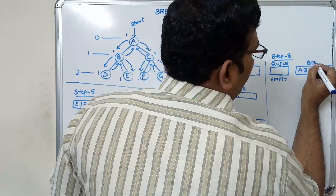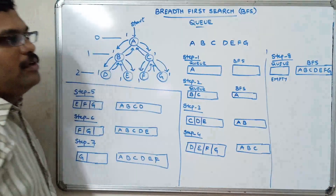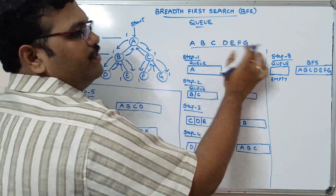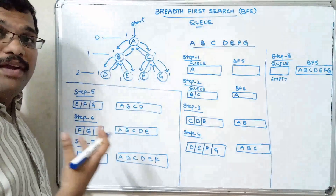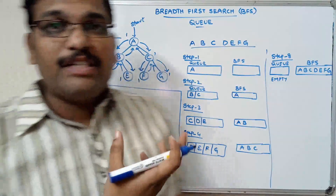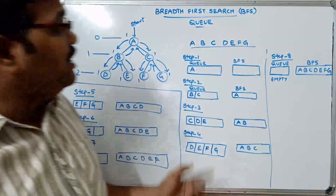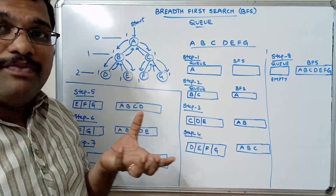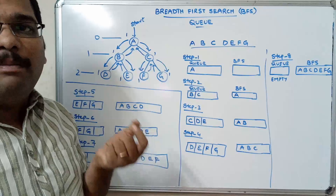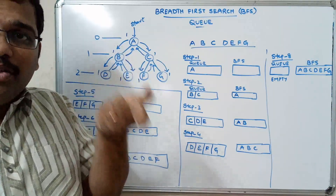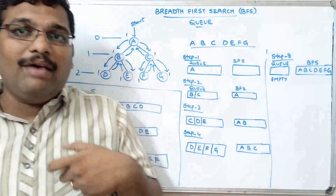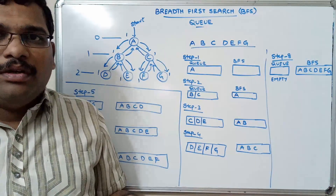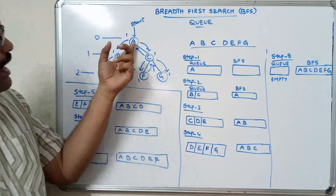The final BFS result is A, B, C, D, E, F, G — the same order we derived earlier. This is how we implement breadth first search using a queue. We are visiting all the nodes level by level. We must visit all nodes in level zero before going to level one, and level one before level two. A is in level zero.